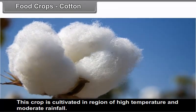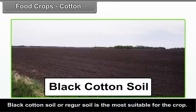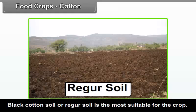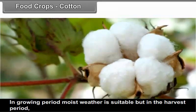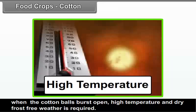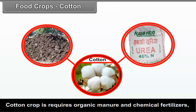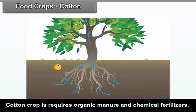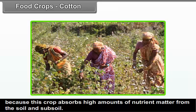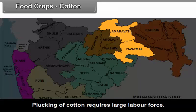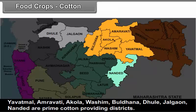Cotton: This crop is cultivated in regions of high temperature and moderate rainfall. Black cotton soil or regur soil is the most suitable for the crop. In the growing period, moist weather is suitable, but in the harvest period, when cotton balls burst open, high temperature and dry frost-free weather is required. Cotton crop requires organic manure and chemical fertilizers as it absorbs high amounts of nutrient matter from the soil. Plucking of cotton requires a large labor force. Yavatmal, Amravati, Akola, Washim, Buldhana, Dhule, Jalgaon, and Nanded are prime cotton-producing districts.